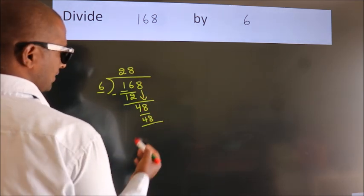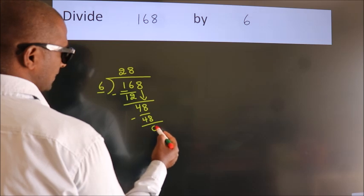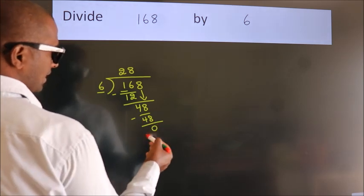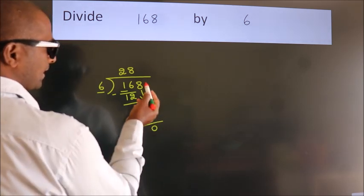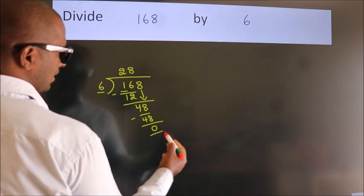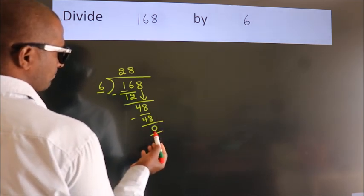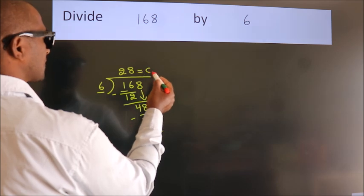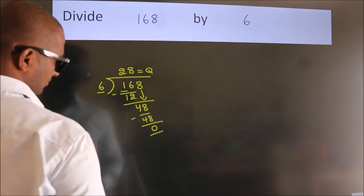Now we subtract, we get 0. After this, no more numbers to bring it down, and we got remainder 0. So, this is our quotient: 2, 8.